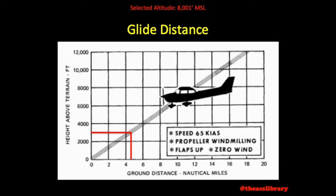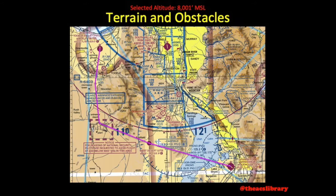Referring again to our Manhattan, New York vs. Kansas example, the terrain and obstructions along this route are pretty similar to that of Manhattan, Kansas. A 4 and a half mile glide distance is plenty for us. We will not need to adjust our altitude for glide distance, so we are still settled on a cruising altitude of 8,001 in this example.